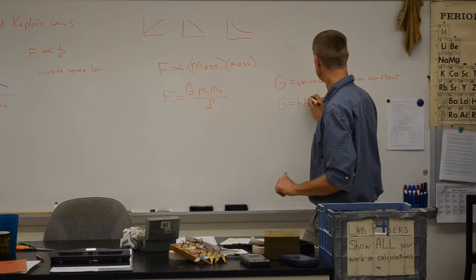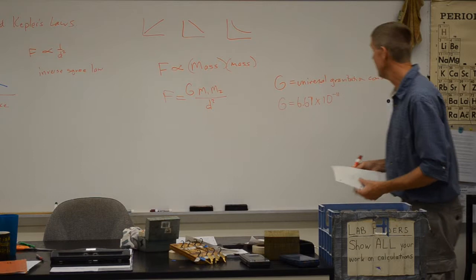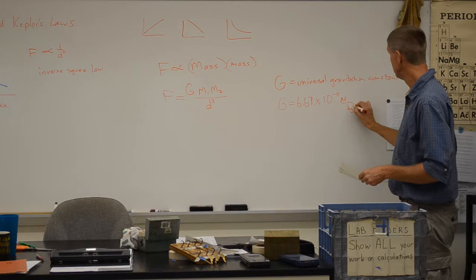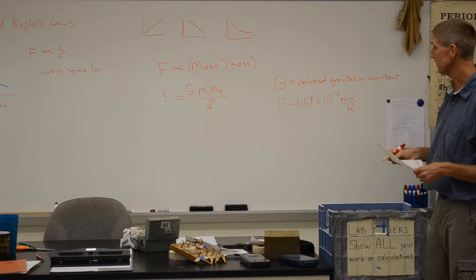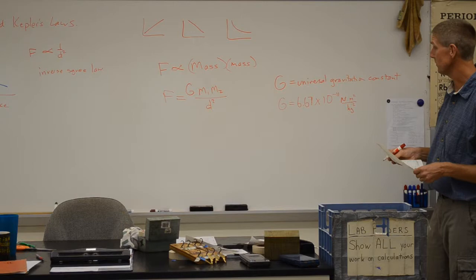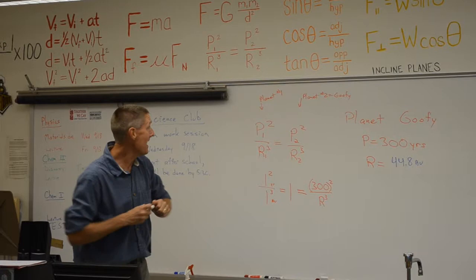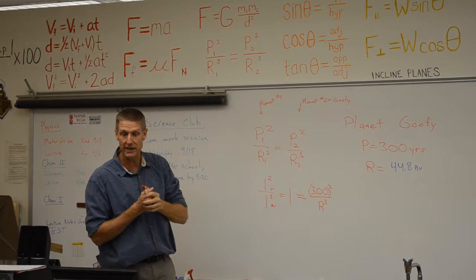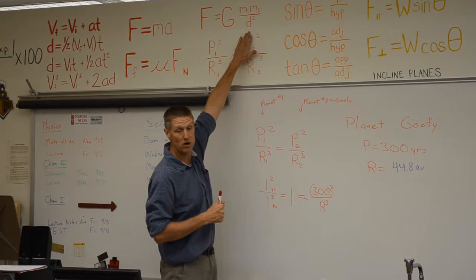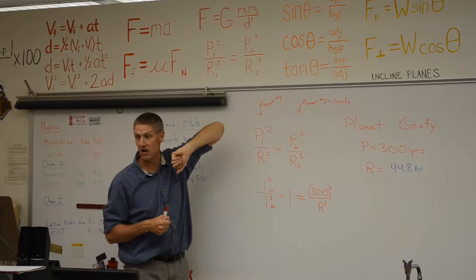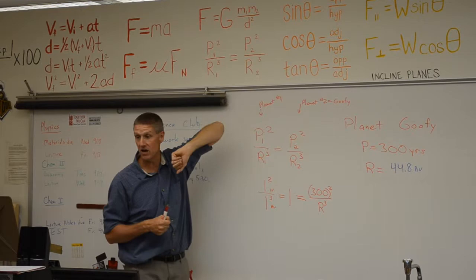We want to end up with newtons, so the units of G must cancel out kilograms squared and meters squared. This formula works for all kinds of things — we can take the mass of two planets and determine how much force there is between them, or take the Earth and moon's masses and distance to find their gravitational force. We can even calculate the gravitational attraction between two students like Zane and Jeremy.